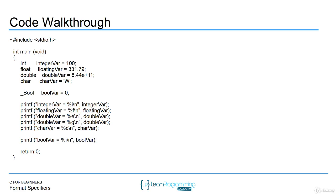%i is going to represent an integer. %d also represents an integer. %f represents a float. %e is going to represent a double, and %g is going to represent a double as well, just in a different format. %c is going to represent a character variable. For boolean values — which are true or false, 0 or 1 — you could use %i as well. Let's go through this example in code blocks.